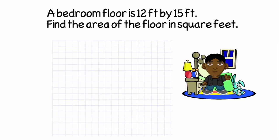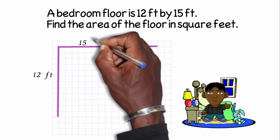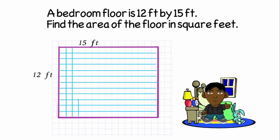Well, I'm going to start by making a diagram. I'm going to draw a rectangle that is 12 feet in length and 15 feet wide. And the length of each square represents a foot. So I'll have 12 squares going down and 15 squares going across.